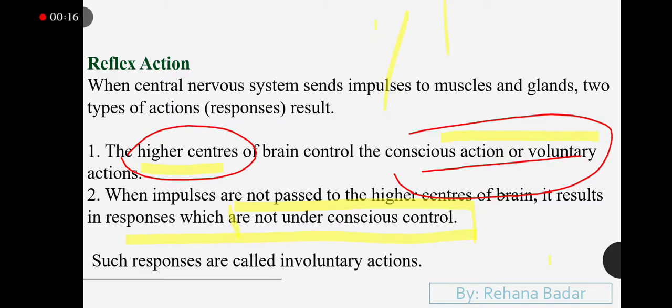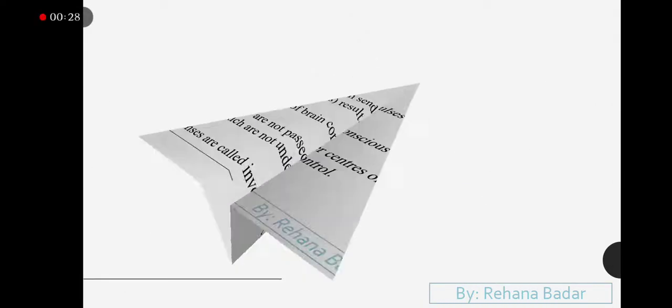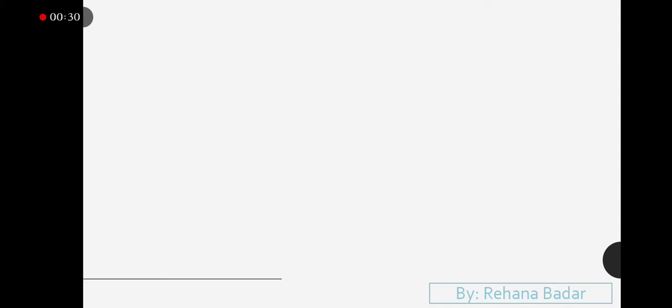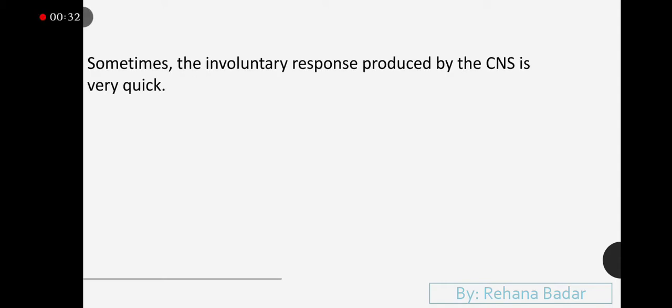Voluntary, when the higher center receives a message, then the result will be voluntary. But when the higher center does not receive a message, the response and result will be involuntary, which is not in our own control, which we are not doing on our own. Like your heartbeat, that is not under your control.